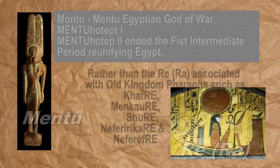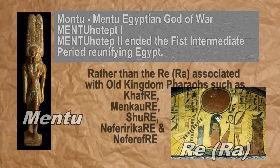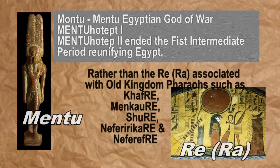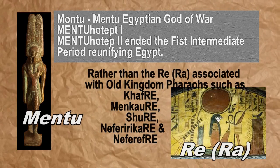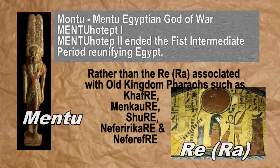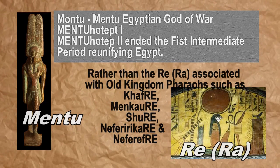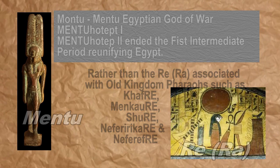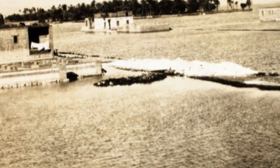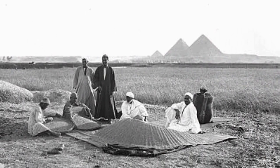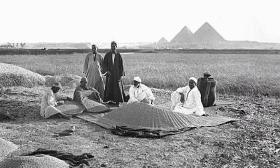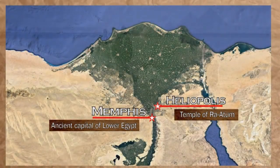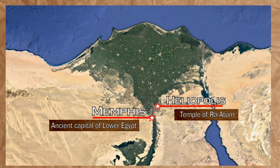The failure of the Nile flooding cycles is now considered the main reason for the end of the old kingdom, beginning a period of civil war and warlords that continued for several centuries — where the name of the Egyptian war god Montu was attached to kings such as Mentuhotep I, II, and III, rather than the Ra names associated with earlier kings such as Khafre, Menkaure, Shepseskare, Neferefre, and Neferirkare. This continued until a new pharaoh and new era once again saw a unified Egypt ruled over by the yearly flooding cycle of the Nile — the Nile Delta being marked by the ancient capital of Memphis, the Giza pyramids, and Heliopolis.